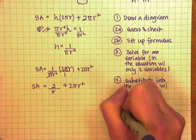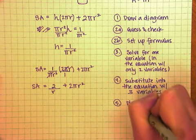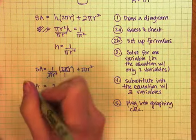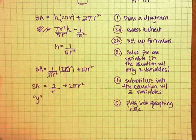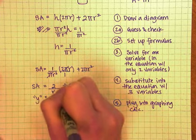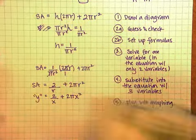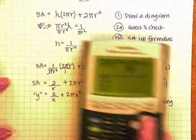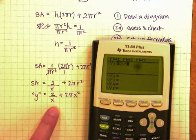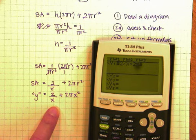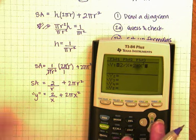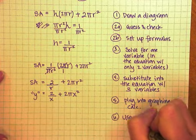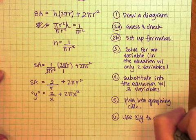Now, after you get this substitution done, you're going to plug this into your graphing calculator. So in my graphing calculator, surface area is going to be y for right now, and r is going to be x. So I'm going to go into my y equals on my graphing calculator, get rid of whatever is there, and I'm going to type in 2 divided by x plus 2πx². And now I want to graph this. But to graph it, we need to fix the window first.